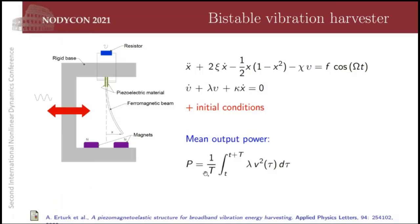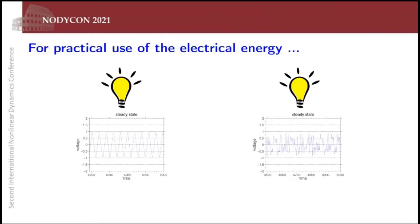But the quantity of interest here is the output power, not the instantaneous power, but average power in a certain interval, which is given by this integral here. Our purpose here is to maximize this quantity here. We want to design this or to discover the environmental conditions which will make this harvester recover more energy. This is the goal.